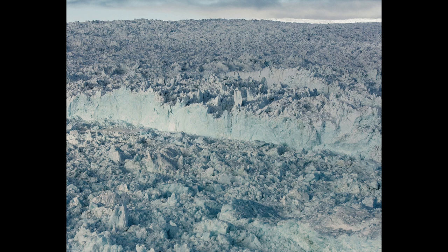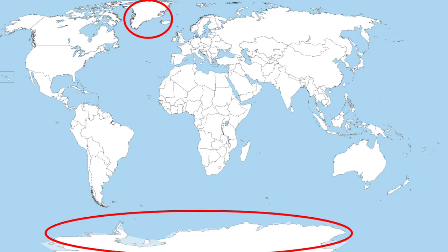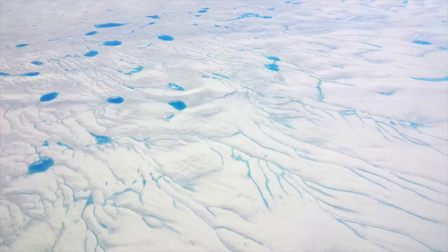An ice sheet, or continental glacier, is a sheet of ice that is larger than 50,000 kilometers squared. There are two ice sheets on earth today: the Greenland Ice Sheet and the Antarctic Ice Sheet. At its full extent, the Laurentide Ice Sheet covered most of Canada and much of the northern United States. In some places, the Laurentide Ice Sheet was a mile thick. Think about that for a second — a mile thick.